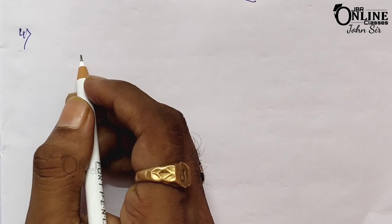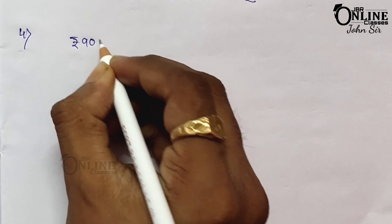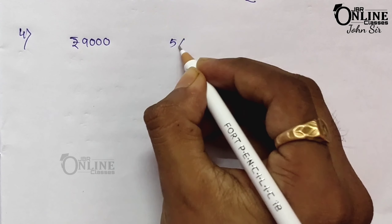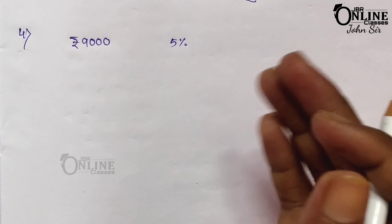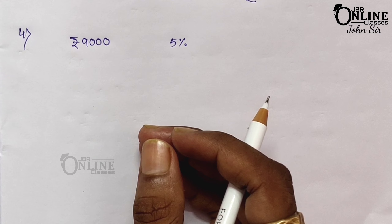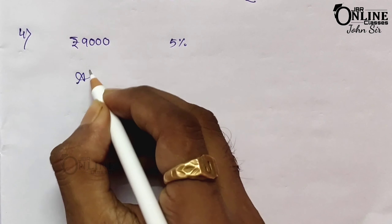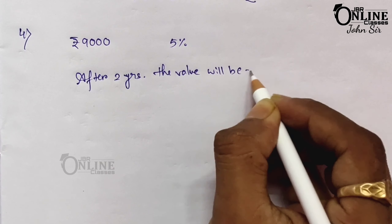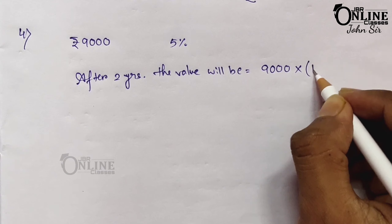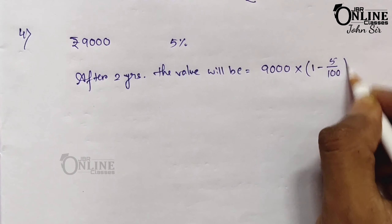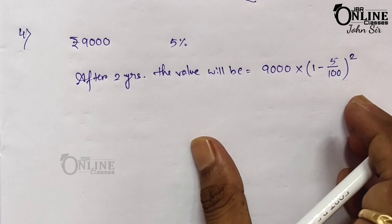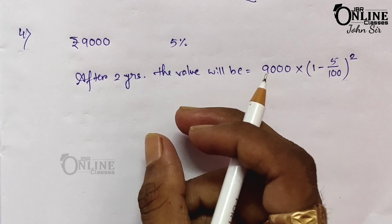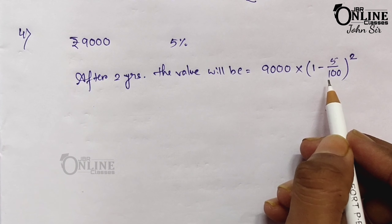Sum number four: the cost of a refrigerator is rupees 9,000. Its value depreciates at the rate of 5 percent every year — remember, depreciation means decrease rate. Find the total depreciation in its value at the end of two years. After two years, the value will be 9,000 into (1 − 5/100) squared. Since this is a decrease rate, you can apply the (1 − r/100) formula.